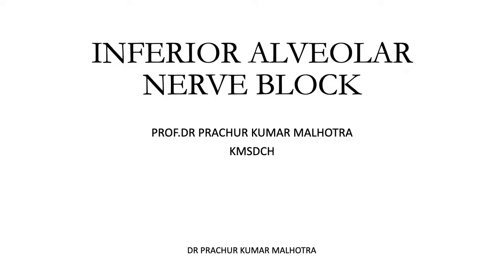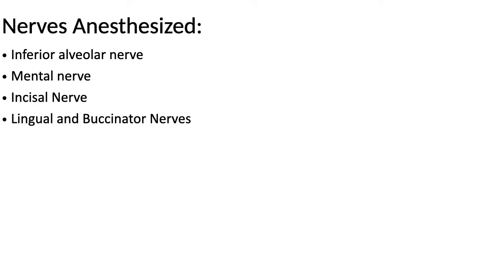Today, the topic for the discussion is inferior alveolar nerve block. Nerves anesthetized include the inferior alveolar nerve, mental nerve, incisal nerve, lingual nerve, as well as buccinator nerves.